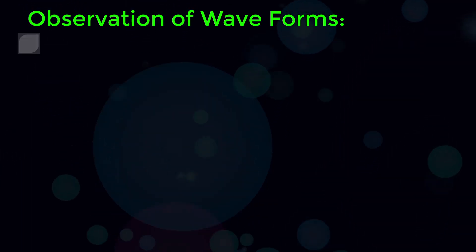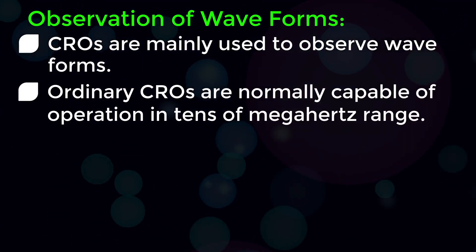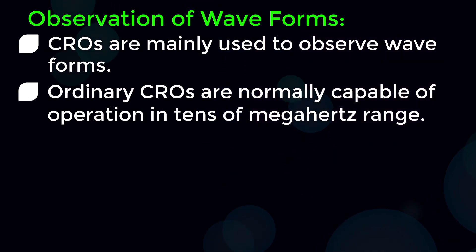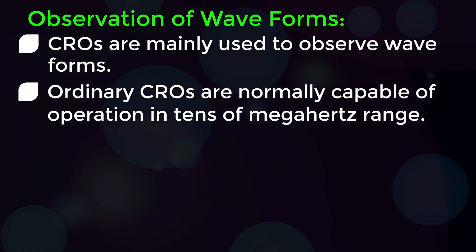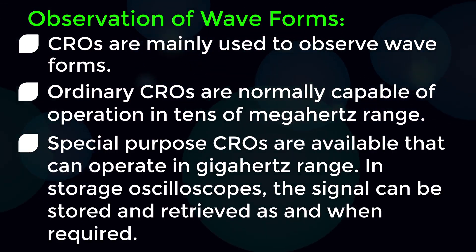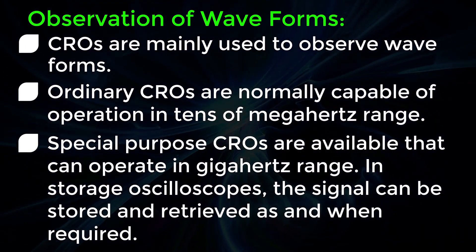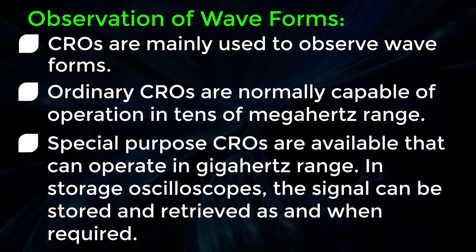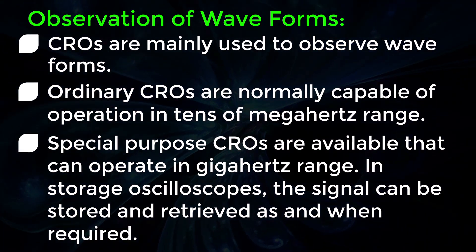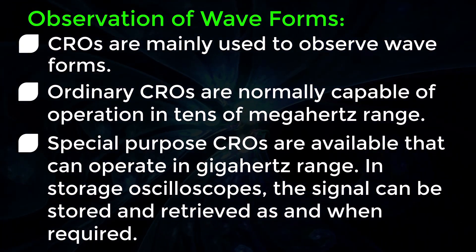Observation of waveforms. CROs are mainly used to observe waveforms. Ordinary CROs are normally capable of operation in the tens of MHz range. Special purpose CROs are available that can operate in the GHz range. In storage oscilloscopes, the signal can be stored and retrieved as and when required.